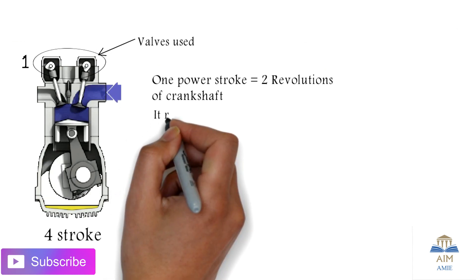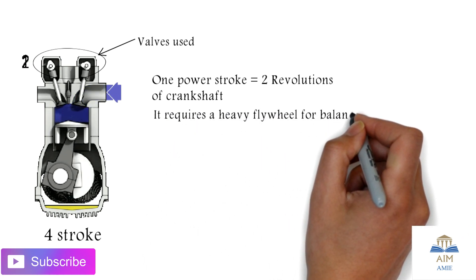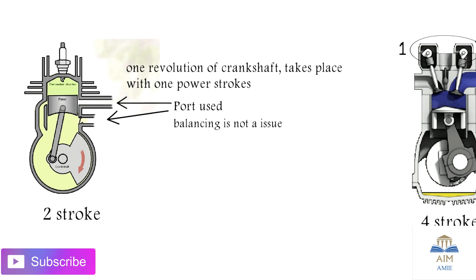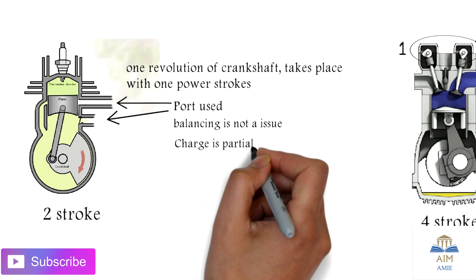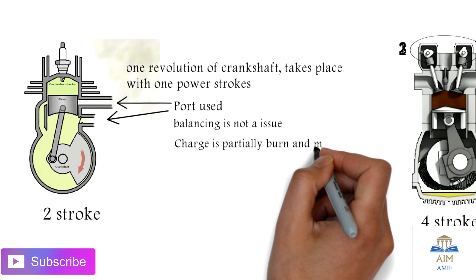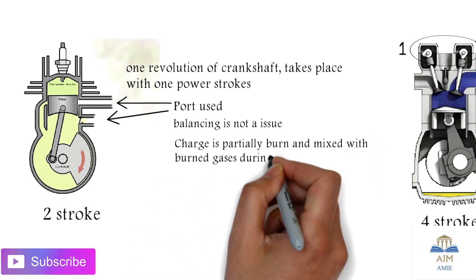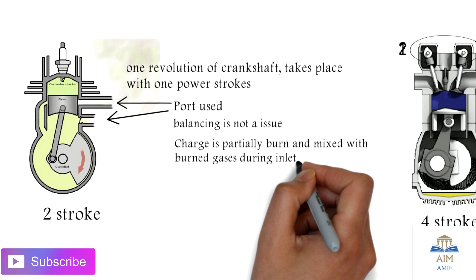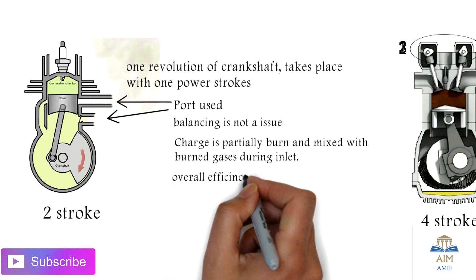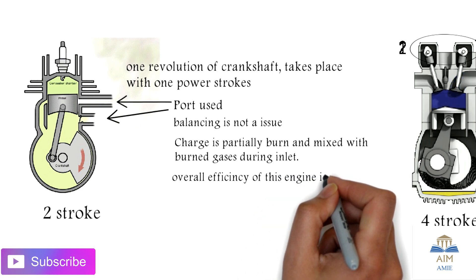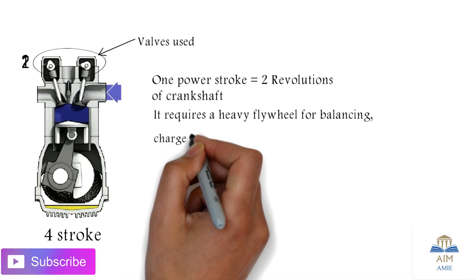In the two-stroke engine, balancing is not an issue, whereas in the four-stroke engine, a heavy flywheel is required for balancing and to dampen vibrations. In the two-stroke engine, the charge — that is, the air-fuel mixture — is only partially burned in the combustion chamber during the cycle, which is why overall efficiency is very low in the two-stroke engine.